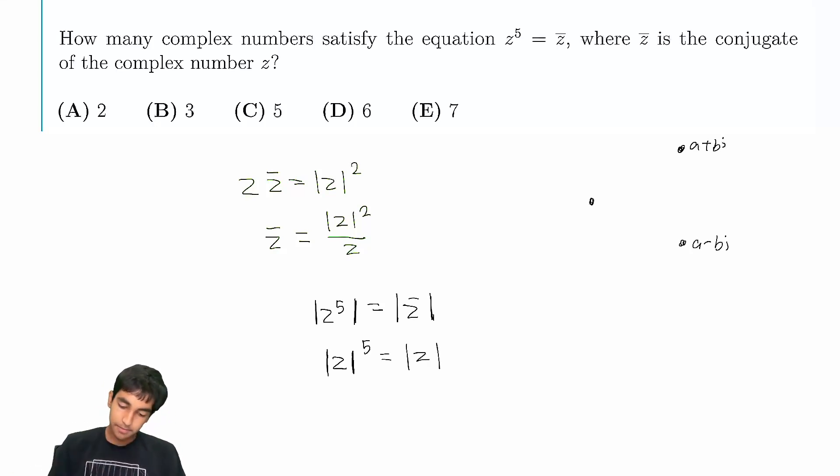And now, this means that the magnitude of z is either 0 or 1, right? We can factor it out as magnitude to the 5th power minus magnitude, and then we get this. We get this thingy times,